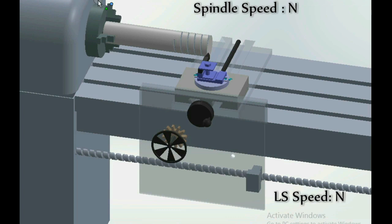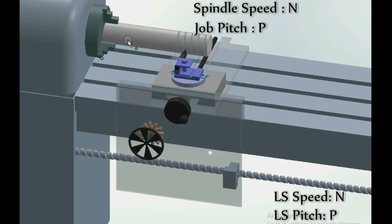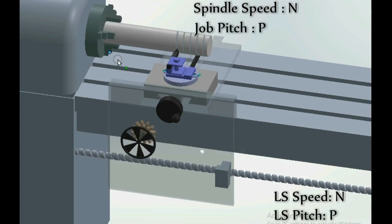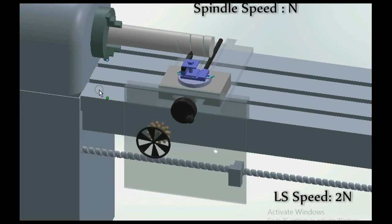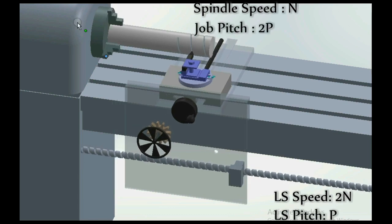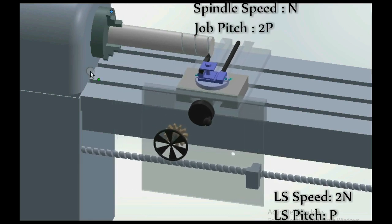If the lead screw rotates at the same speed as the spindle, the thread generated will have the same pitch as the lead screw. If the lead screw rotates at twice the spindle speed, the pitch of the generated thread will be twice the lead screw pitch.